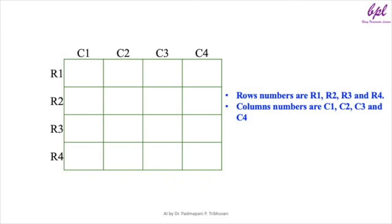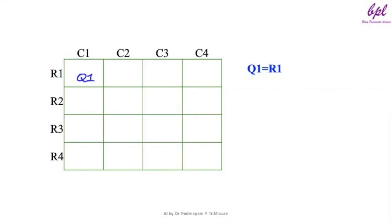Initially, our 4x4 board is empty. We begin by placing queen 1, q1, assigning it to row 1, i.e. q1 = r1. This placement does not violate any constraints. Next, we place queen 2. We first try q2 = r1 but this violates the constraint that no two queens can be in the same row — q1 and q2 are both in row 1. So we move q2 to row 2.